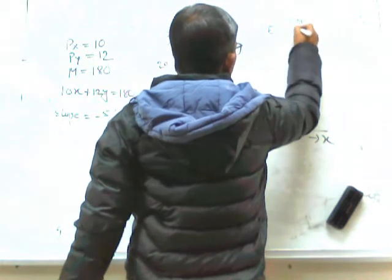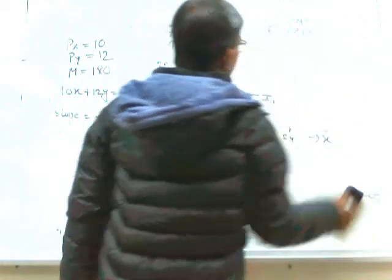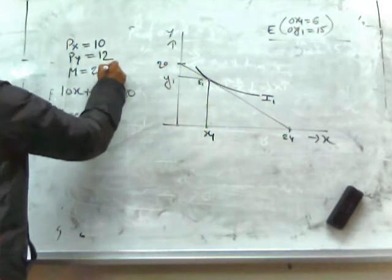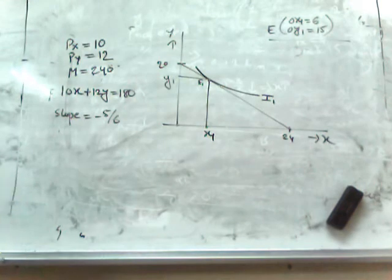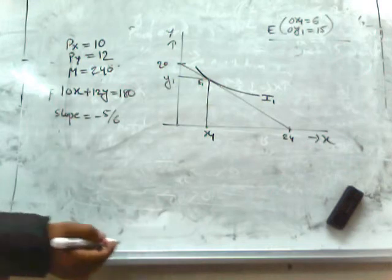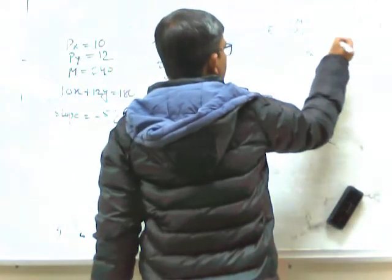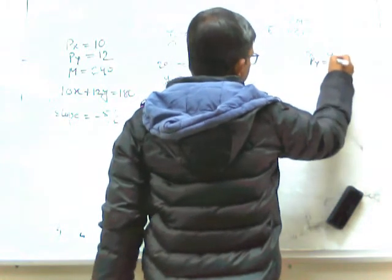We consider OX1 equals 6 and OY1 equals 15. Total expenditure will be 240. Now we consider that the price of X falls and the new price vector is PX equals 6, PY equals 12 as usual.